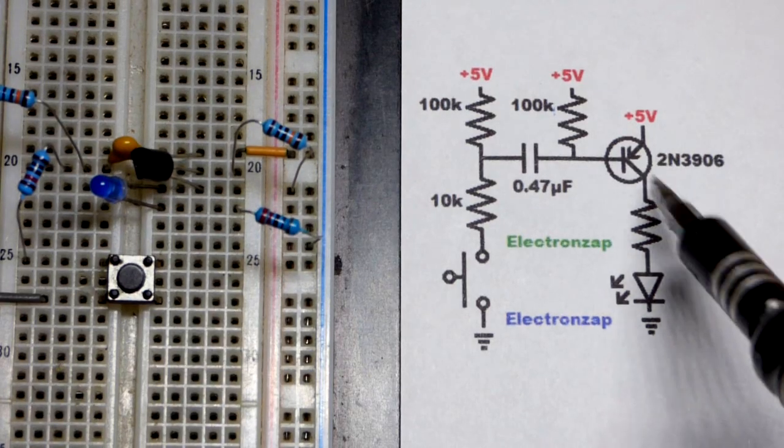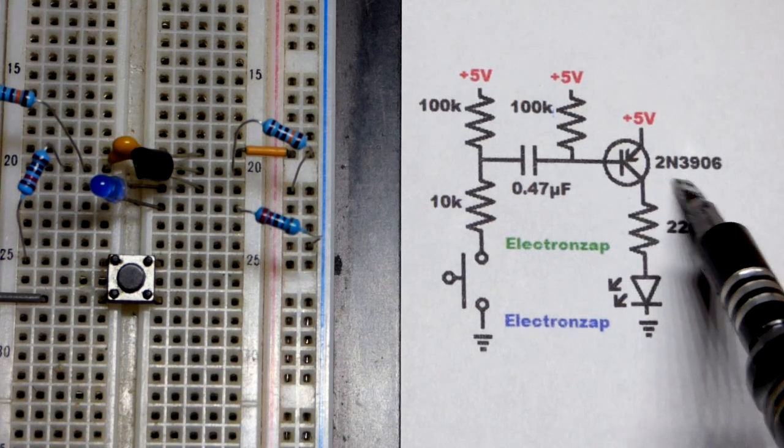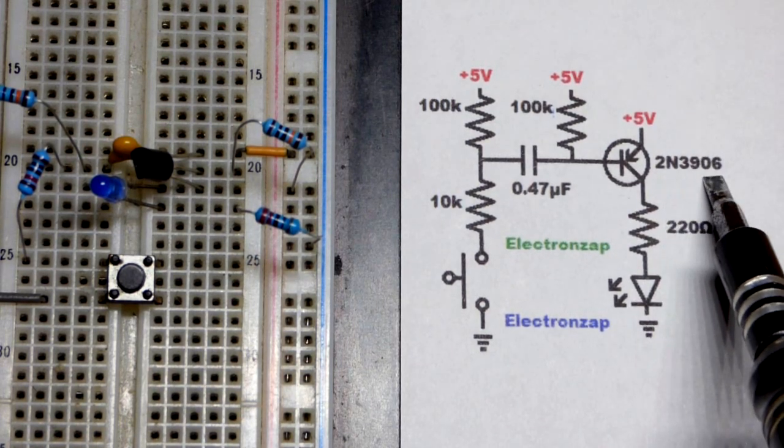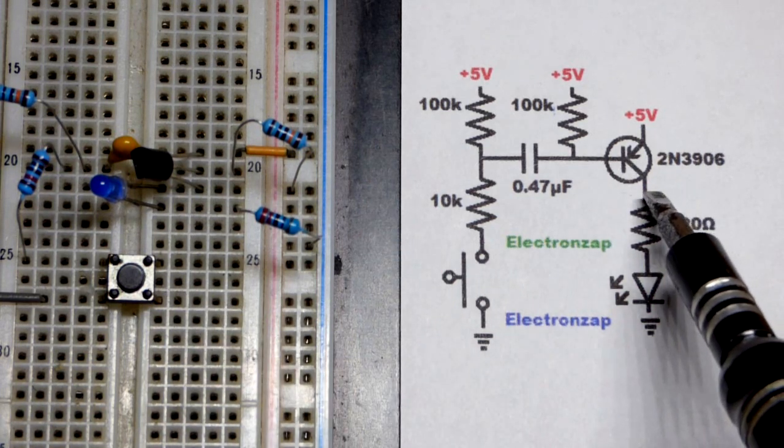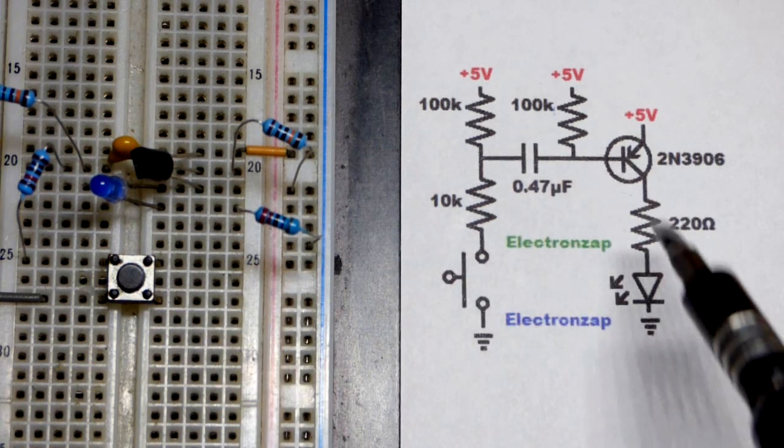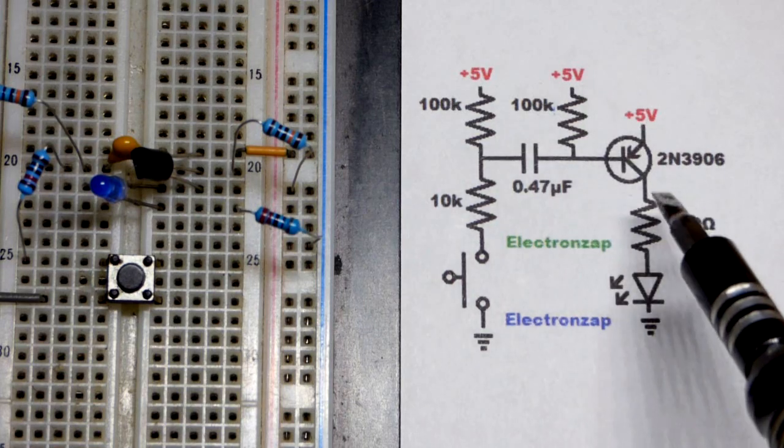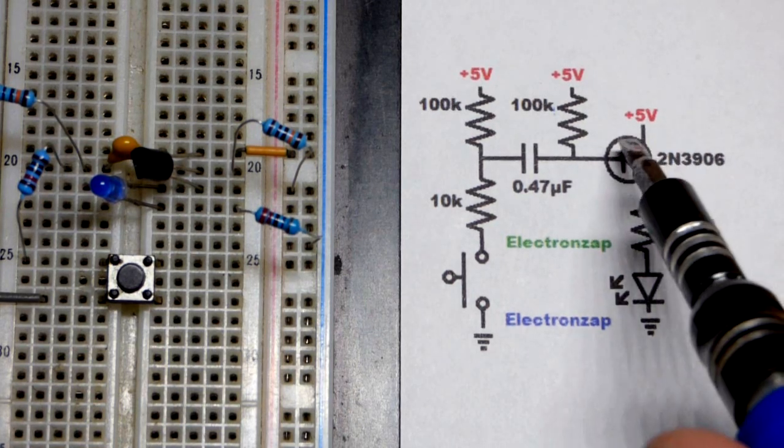Now we'll zoom in to get a closer look at the circuit. We got a PNP bipolar junction transistor 2N3906. We made the same circuit with the NPN bipolar junction transistor a couple of videos ago. Everything is the same other than polarities.